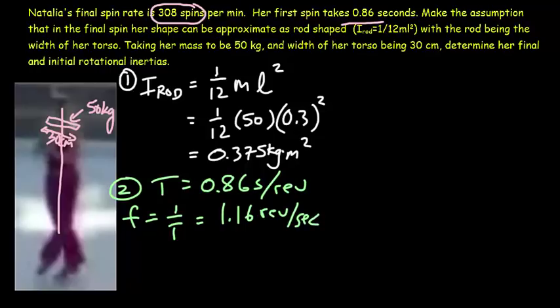Now, we want to convert that to revolutions per minute because we want to have the same units as her final spin rate, which was 308 spins per minute. So, we're going to do a conversion. Convert the seconds to minutes and there's 60 seconds in 1 minute. So, we're effectively multiplying by 60. Work that out and you should get 70 revolutions every minute.